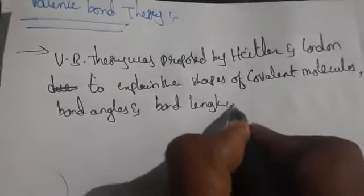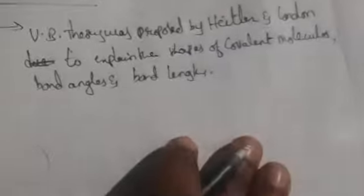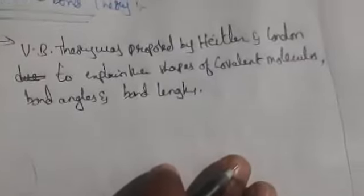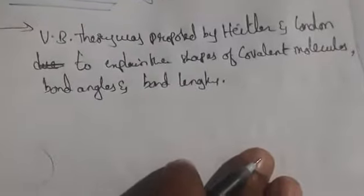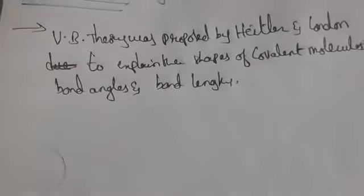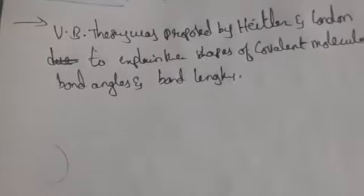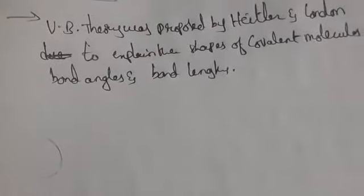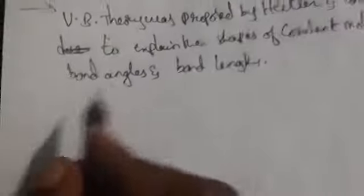Valence Bond Theory was later extended by Pauling and also Slater to explain the directional nature of covalent bonds.